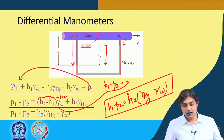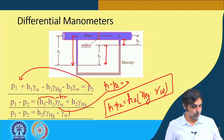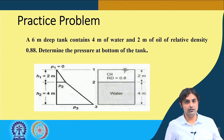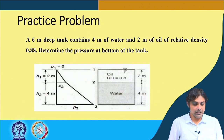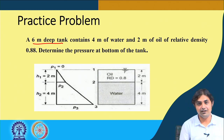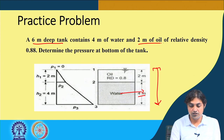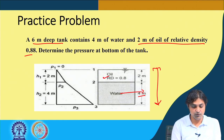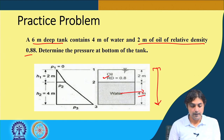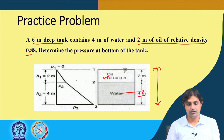This concludes the first part on pressure variation with location. Now we solve a problem: we have a 6-metre deep tank containing 4 metres of water and 2 metres of oil of relative density 0.88. We need to determine the pressure at the bottom of the tank. The pressure variation diagram is drawn on the side for convenience.